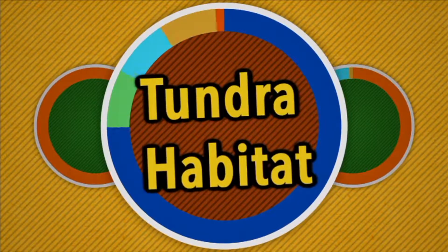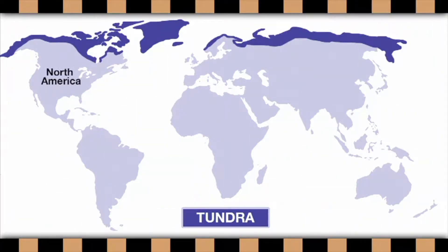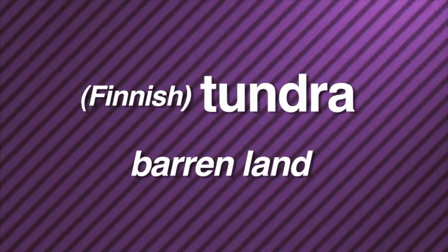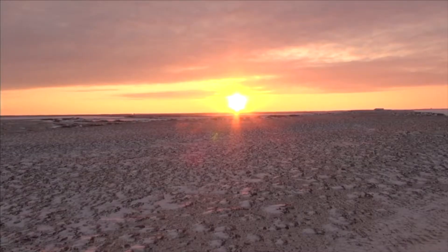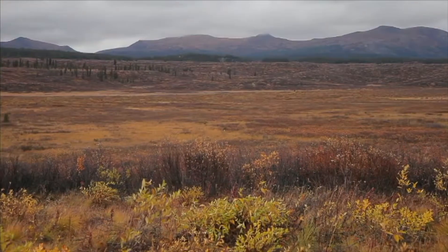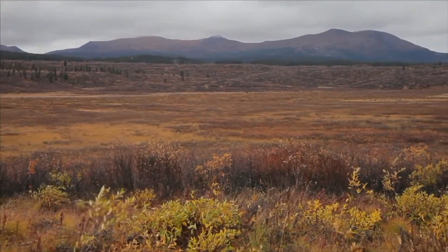The Tundra Habitat. The next habitat we're going to visit is the Tundra. The Tundra is found in North America, Greenland, and parts of Northern Europe and Northern Asia. The word Tundra comes from a Finnish word which means barren land. It was considered barren because there are no trees on the Tundra. The Tundra is cold and bleak. However, there is some plant life, mostly mosses, grasses, and dwarf shrubs. Even though the climate is cold and the habitat offers very little shelter from the weather, some animals do live on the Tundra.